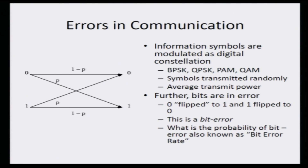Furthermore, these information symbols are received in error. For instance, information bit 0 can be received in error as information bit 1, or information bit 1 can be received as information bit 0. This is termed as a bit error, and therefore the probability of bit error — which is also known as the bit error rate — is used to characterize the performance of any digital communication system. Hence, one needs to understand concepts of probability to characterize the bit error rate performance of communication systems.